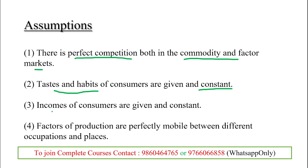The incomes of consumers are also given and constant. Factors of production — land, labor, capital, and entrepreneurship — are also assumed to have perfect mobility between different occupations and places, with no restriction on movement according to occupation or place.